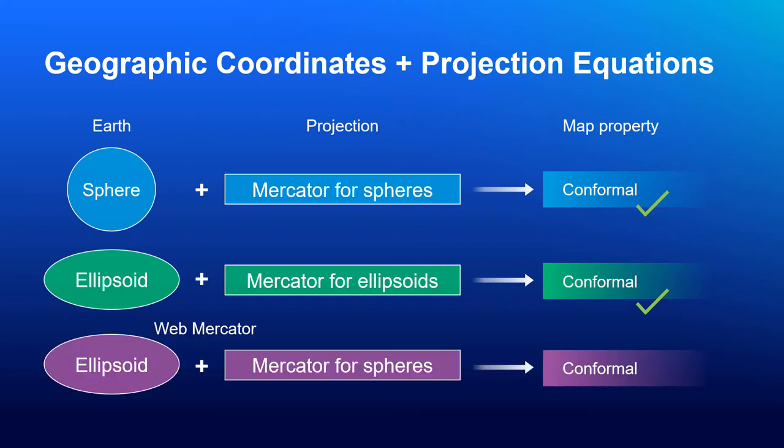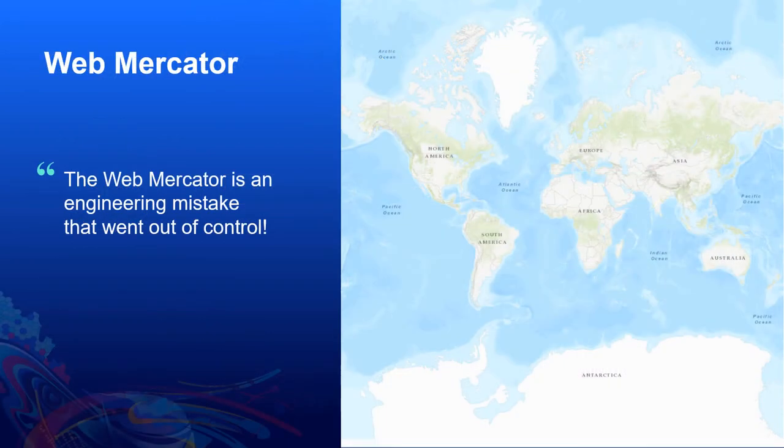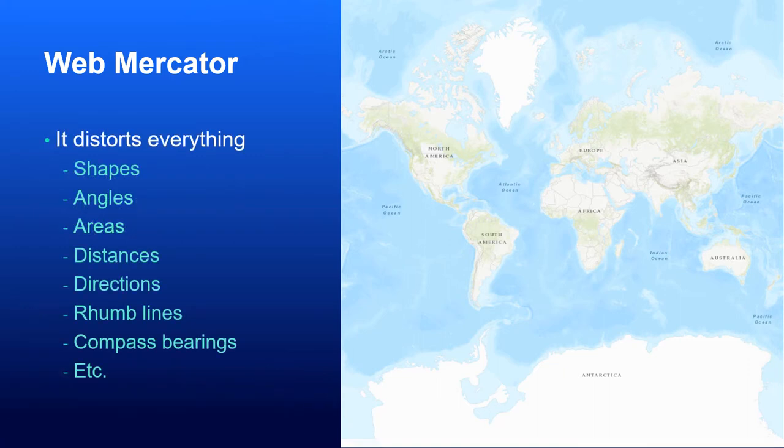Now, Web Mercator used data based on WGS 1984 ellipsoid, but it projects the data with Mercator projection for spheres. This is why we have a name, auxiliary sphere, in the projection algorithm. Does this combination of Web Mercator also result in a conformal map as previous two cases? The answer is no, it does not. Because Web Mercator is mixing two different Earth models, such map loses all good properties of Mercator projection, like conformality and straight rhumb lines. So basically, Web Mercator was a mistake which got out of control. If you thought that Web Mercator preserves something, the answer is it does not. It distorts everything. It distorts shapes, angles, areas, distances, directions, rhumb lines, compass bearings, you name it.